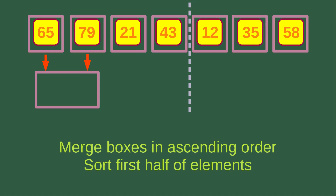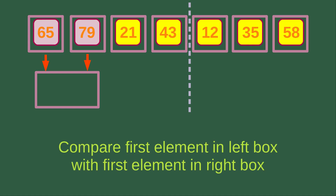Now we would like to sort the first two elements on the first half of the whole list. The sorting process is like this: we need to compare the first element in the left box with the first element in the right box. So we are going to compare 65 with 79.